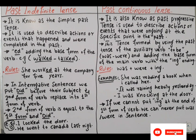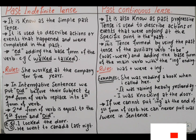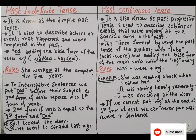Go becomes 'went'. Common time expressions used with the simple past tense include 'yesterday', 'last week', and '1990'. Remember that these rules apply to both regular and irregular verbs in the simple past tense. It is important to know the past tense forms of common irregular verbs, as they don't follow the standard 'ed' pattern.